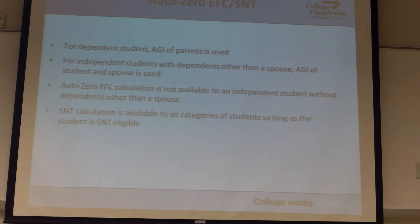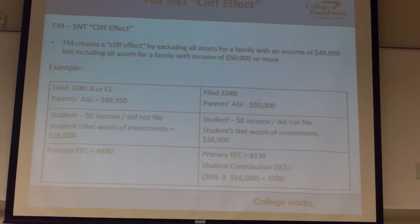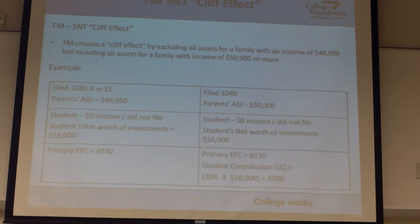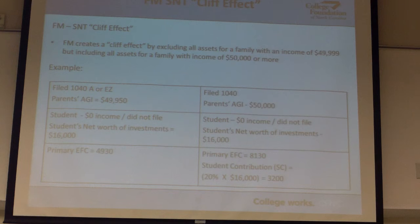For dependent students we're using parent information; for independent students we're going to use their information. Here's the problem with auto-zero EFC: the benefit is that if you don't have a lot of money, we're not going to make you fill out this whole form. The downside is as soon as someone makes a little bit more — just over $24,000 — suddenly they've got to answer all these other questions and they're not zero EFC. For the simplified needs test, if they make less than $50,000, the minute they make $50,000 even — and the government rounds up, so technically if they make $49,999.98, we round up to $50,000 — they don't qualify anymore. And because they had to include their asset information, their EFC can jump significantly. So there's this cliff effect for folks.